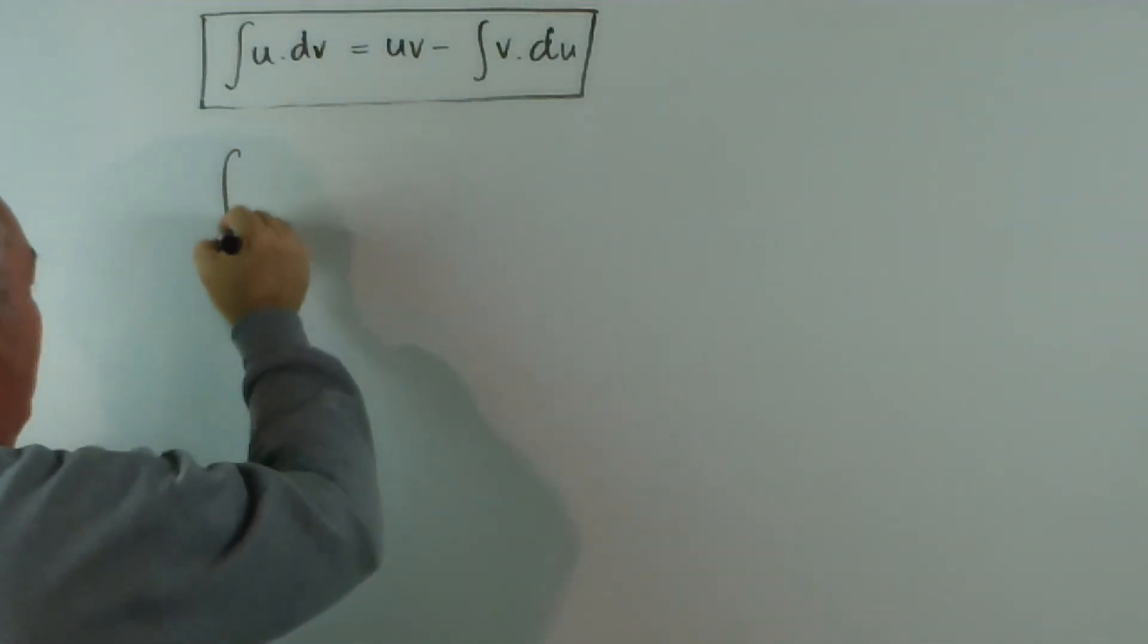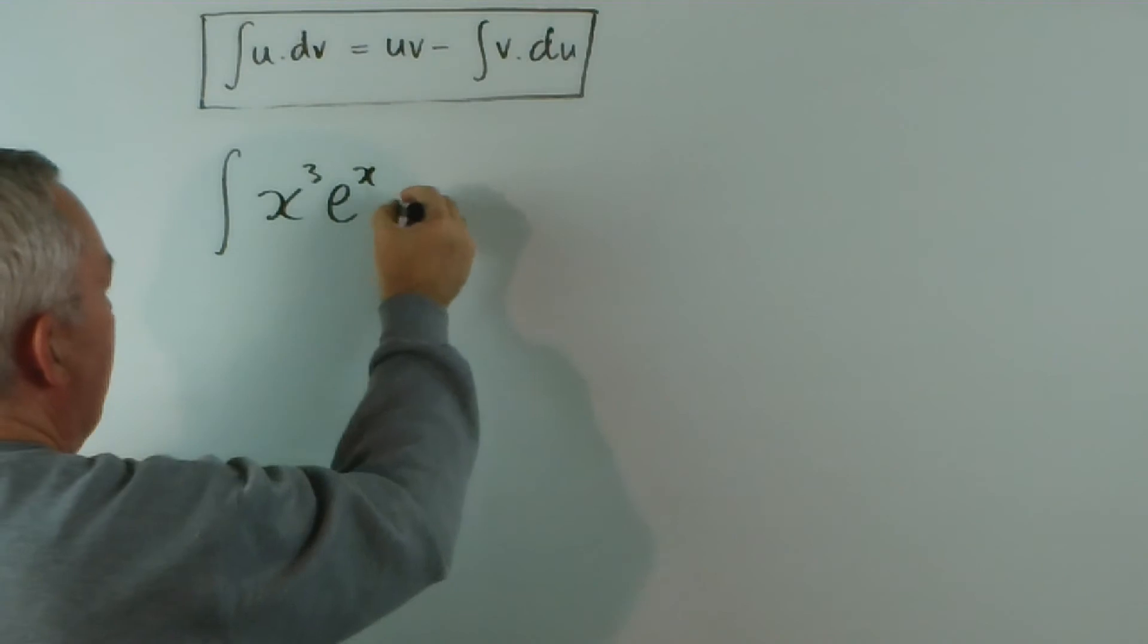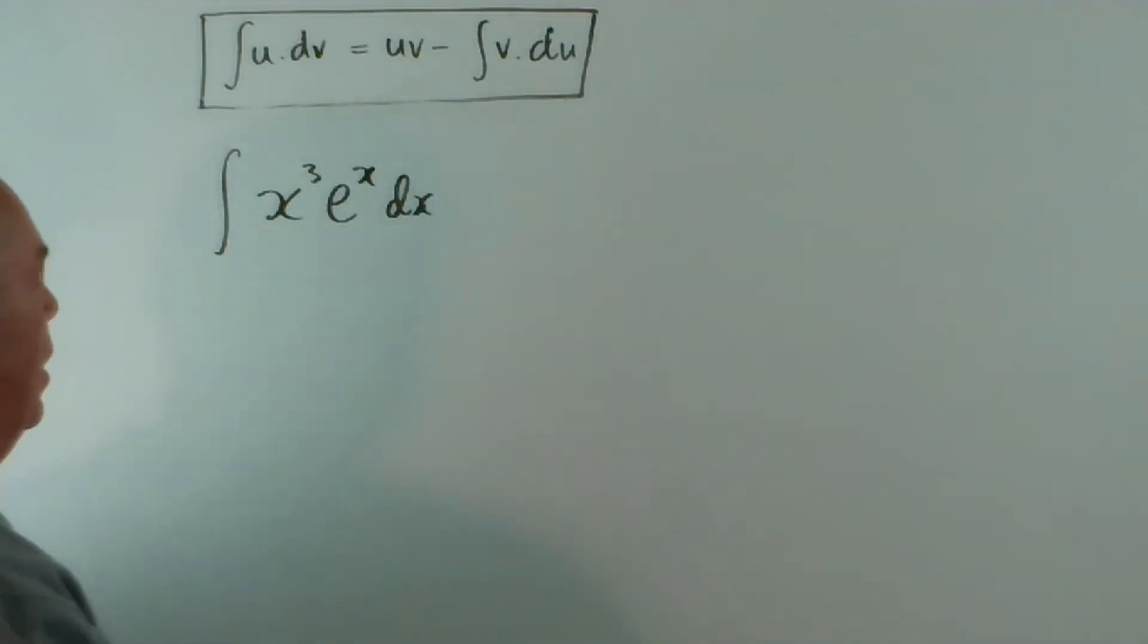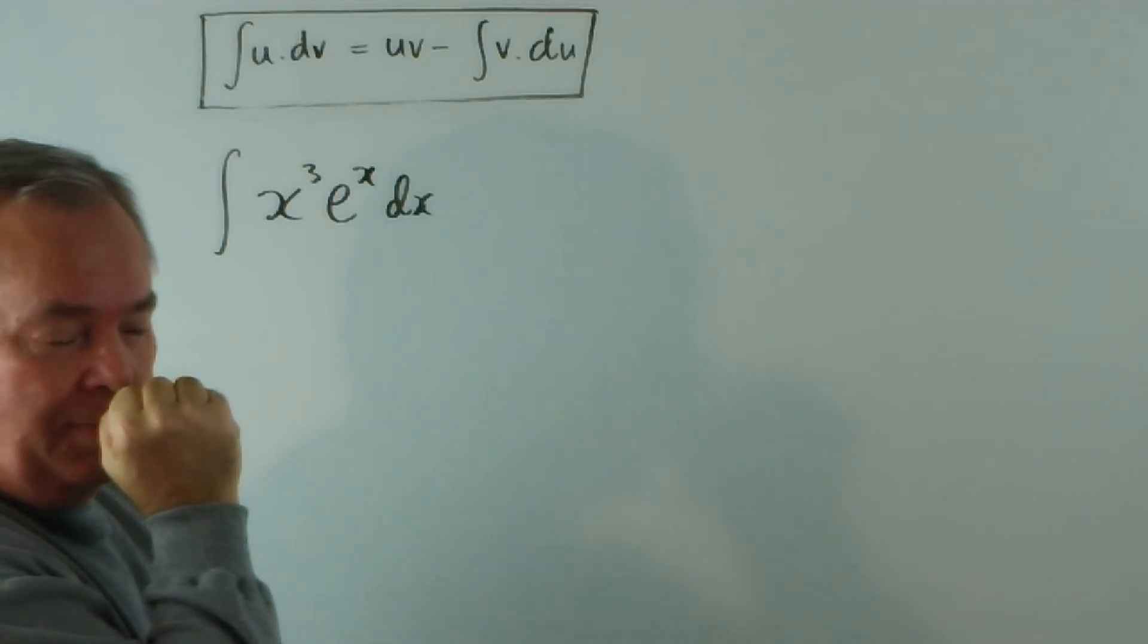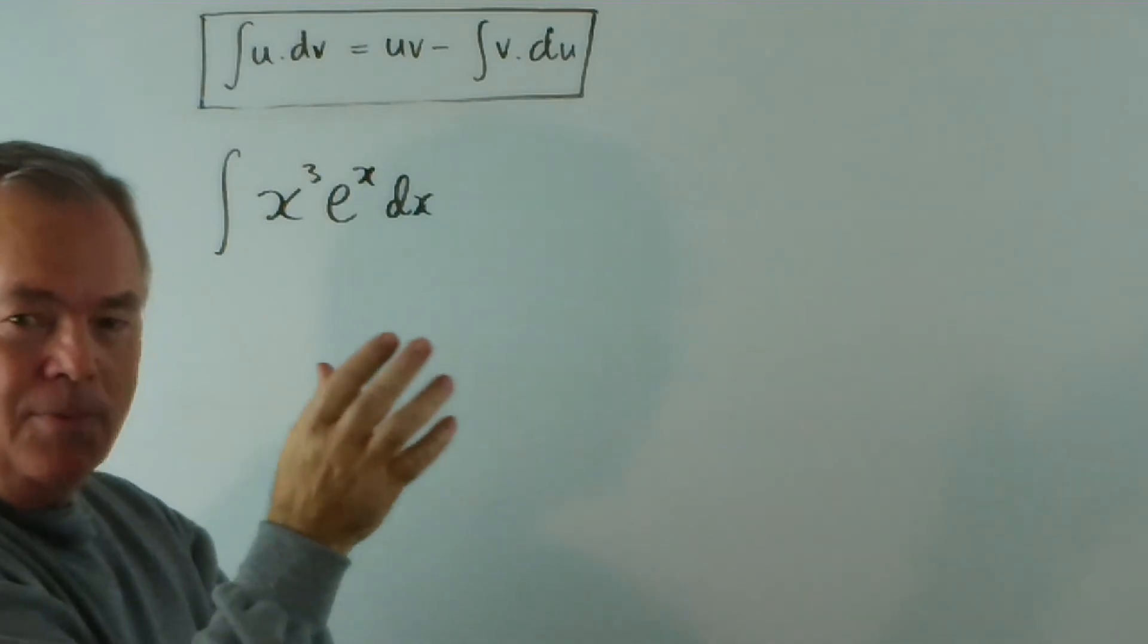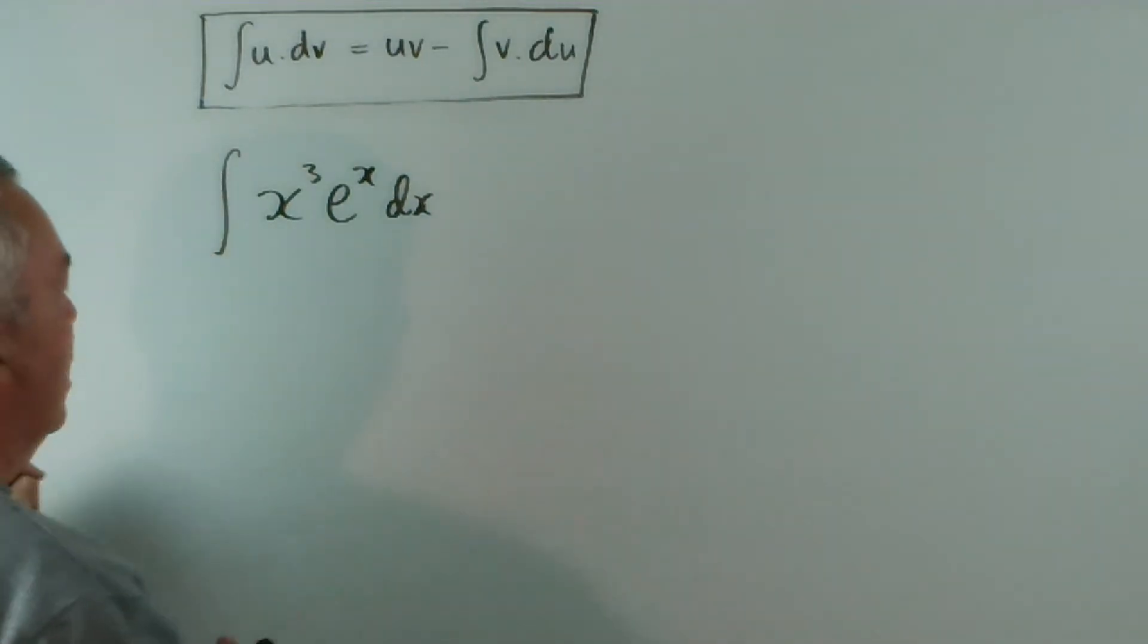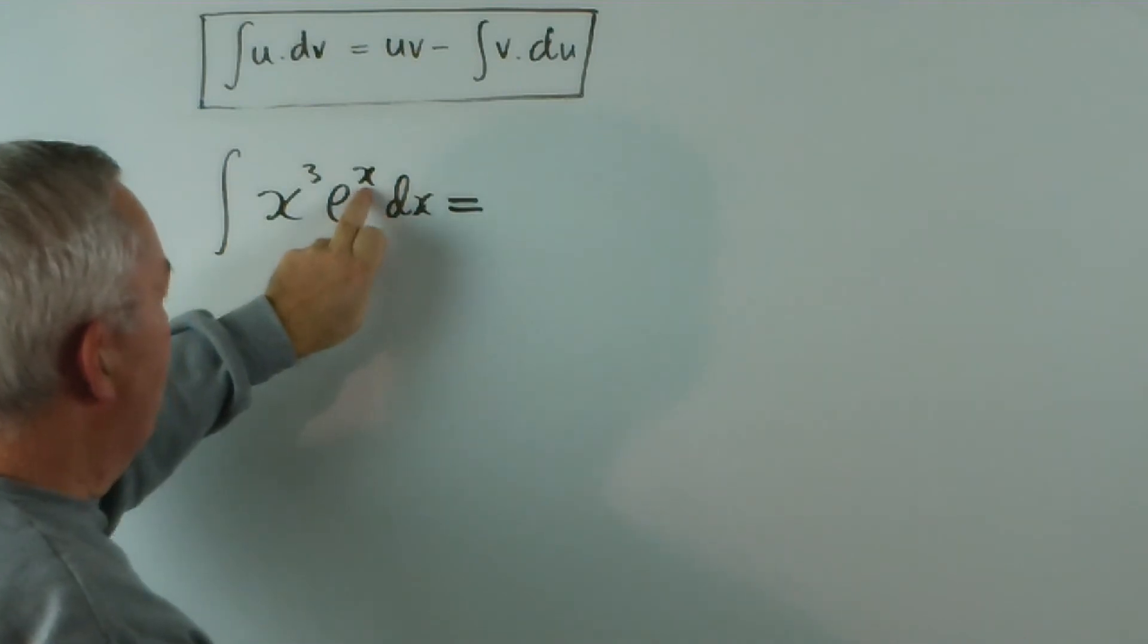Now, I wrote down - here we go - what happens if I've got something like x^3 e^x dx? What happens with this? Well, this actually opens up a whole field of mathematics where you're dealing with long series of expressions. And with the right expressions, infinite series. So, an integral can produce an infinite series. Let me show you how this one would develop.